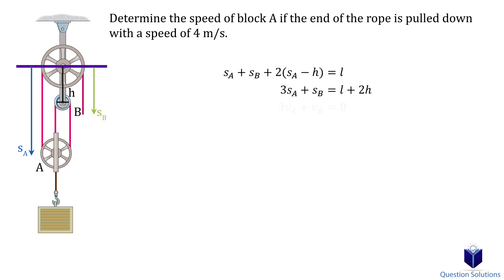Remember that H is a constant, just like the total length. When we take the derivative of this equation, it also becomes zero. Now we can plug in 4 meters per second into VB and solve for VA. We get negative 1.33 meters per second or 1.33 meters per second upwards.